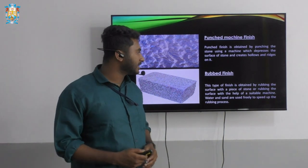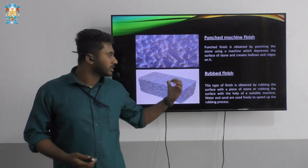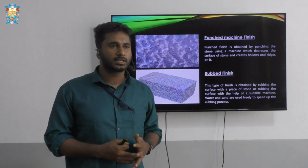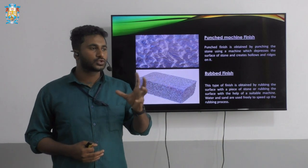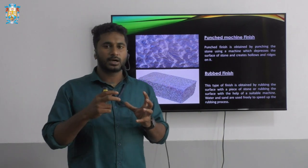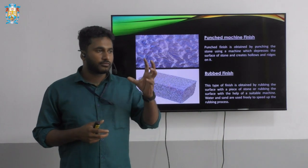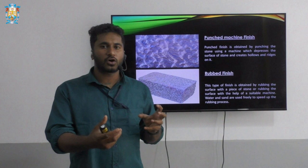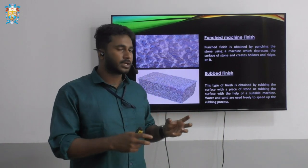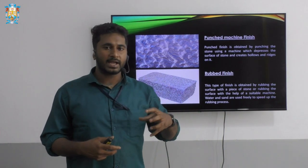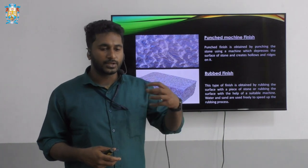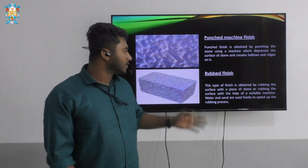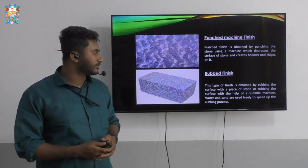Next we have the rubbed finish. In this type of finish, two stones are rubbed against each other like a sandwich — the surface of one stone is rubbed to the surface of another stone. Periodically, sand and water are introduced while rubbing the stones. That is called the rubbed finish.